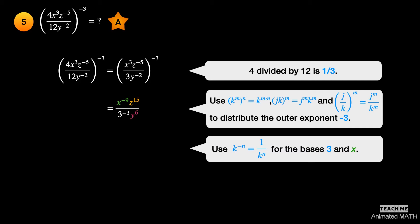Use the fourth property for bases 3 and x. Base 3 is moved to the numerator and its exponent is now positive 3. Base x is moved to the denominator and its exponent is now positive 9. Expand 3 cubed. The simplified form is 27z to the 15th power over x to the 9th power, y to the 6th power.